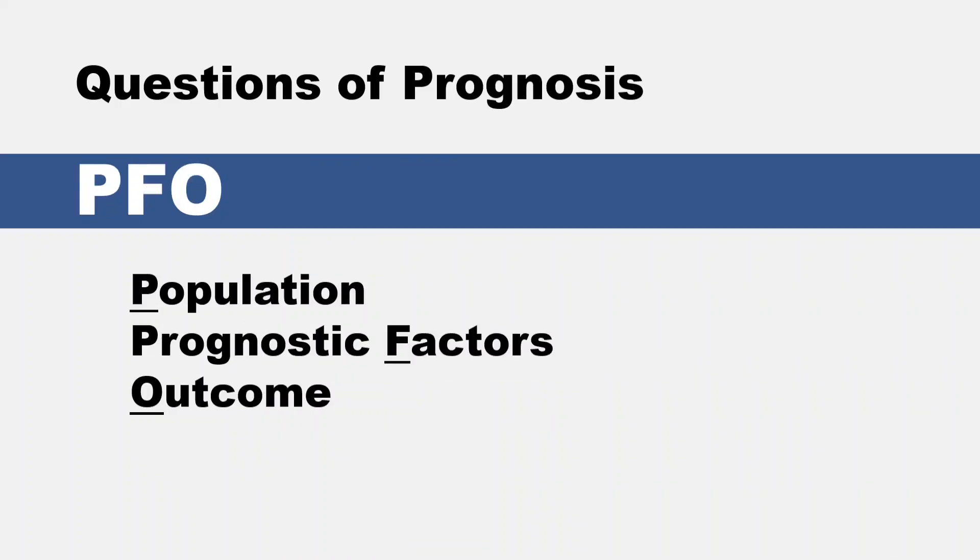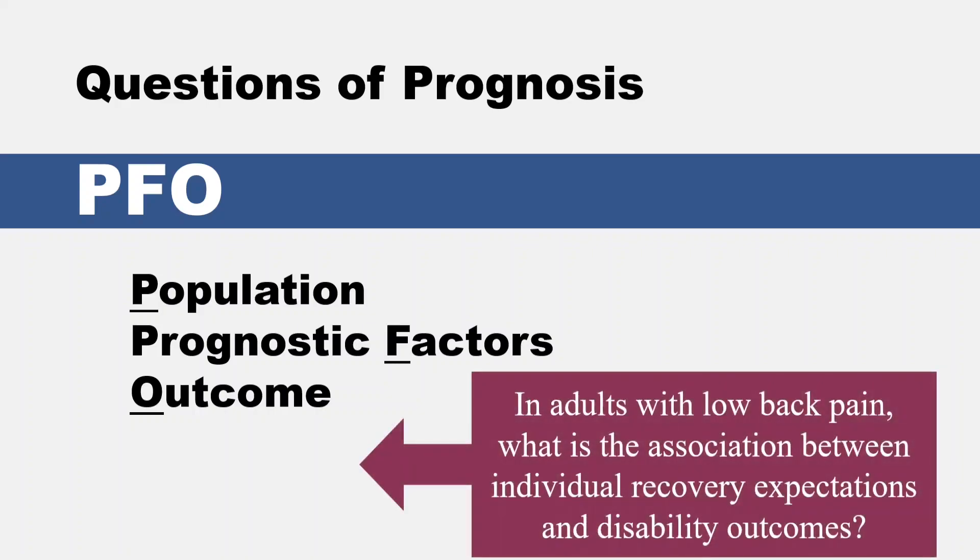The next one is suitable for questions of prognosis — PFO: population, prognostic factors, and outcome. Sample topic: 'In adults with low back pain, what is the association between individual recovery expectations and disability outcomes?'